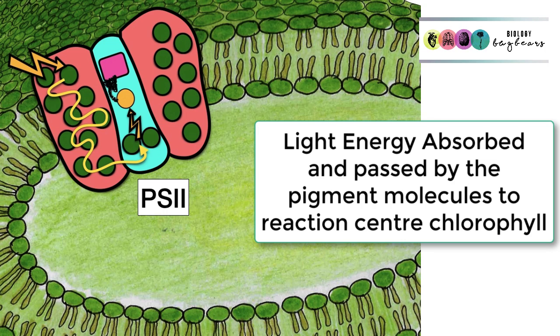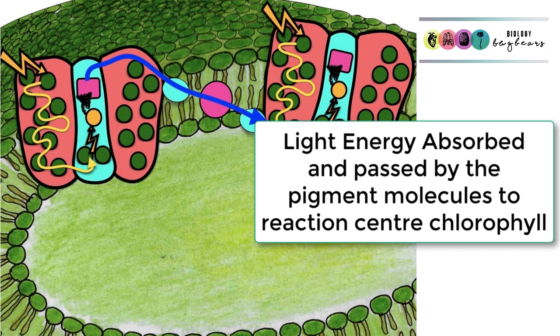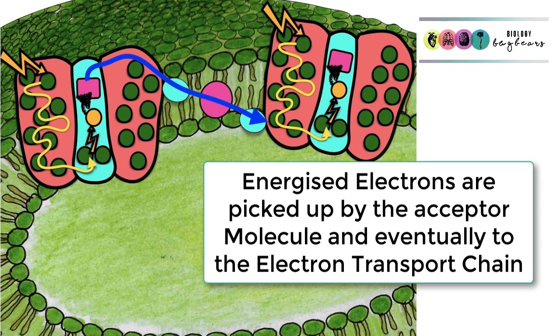The pigment molecules absorb the light energy. It gets passed from molecule to molecule until it reaches the reaction center chlorophyll. Here, energized electrons then are picked up by the electron acceptor molecule, and they are eventually passed over an electron transport chain where ATP is generated.